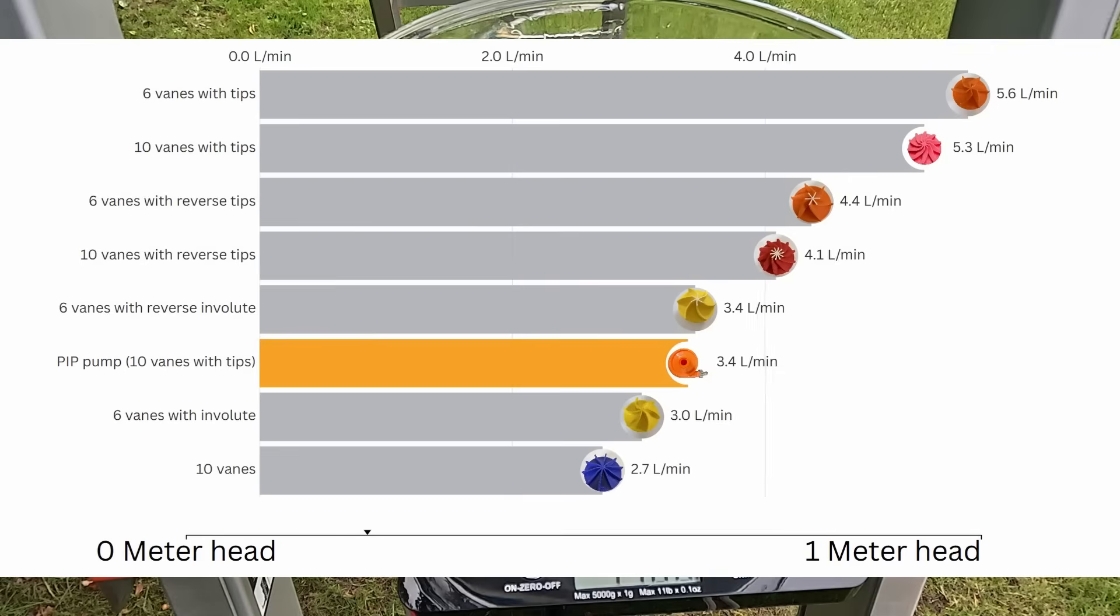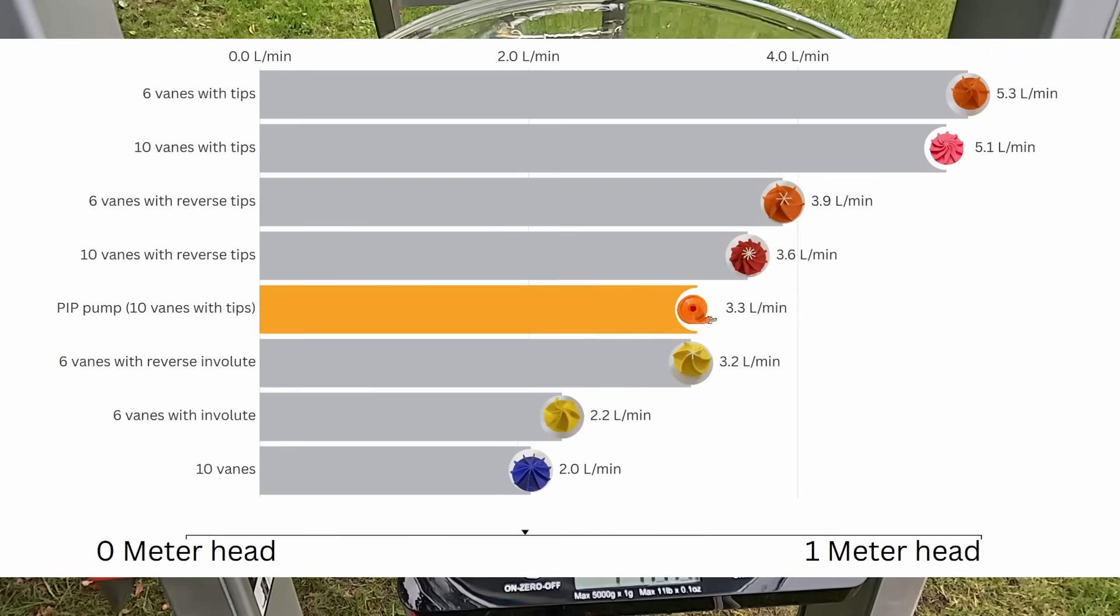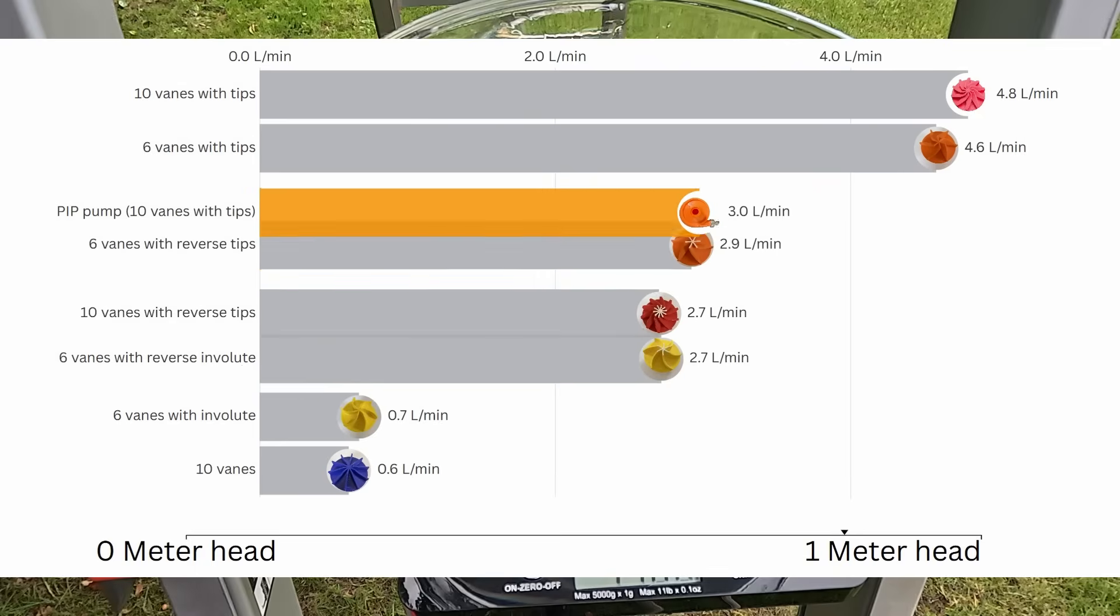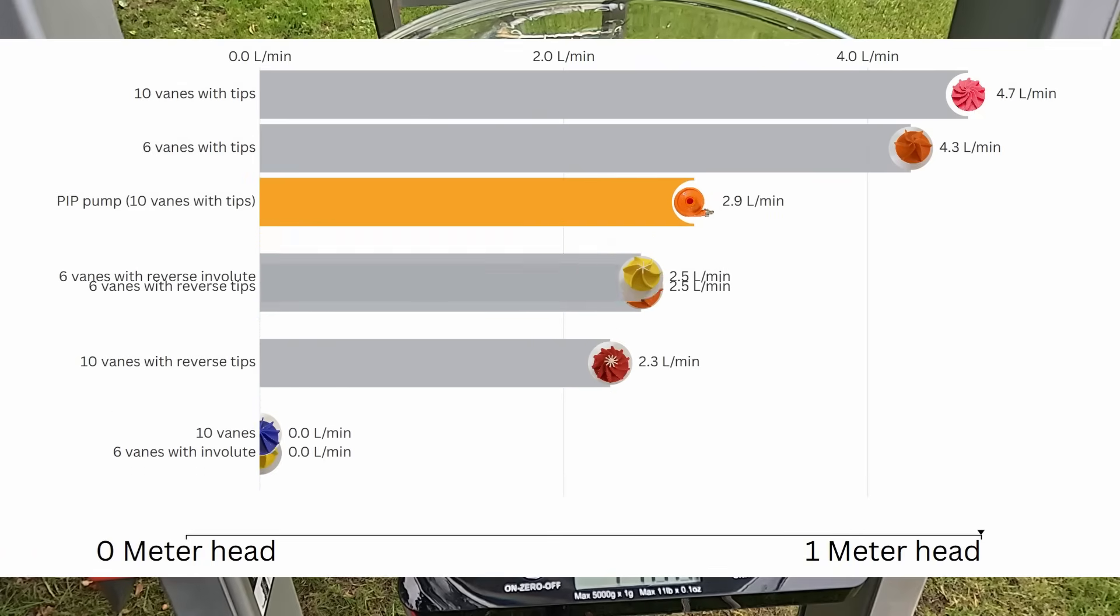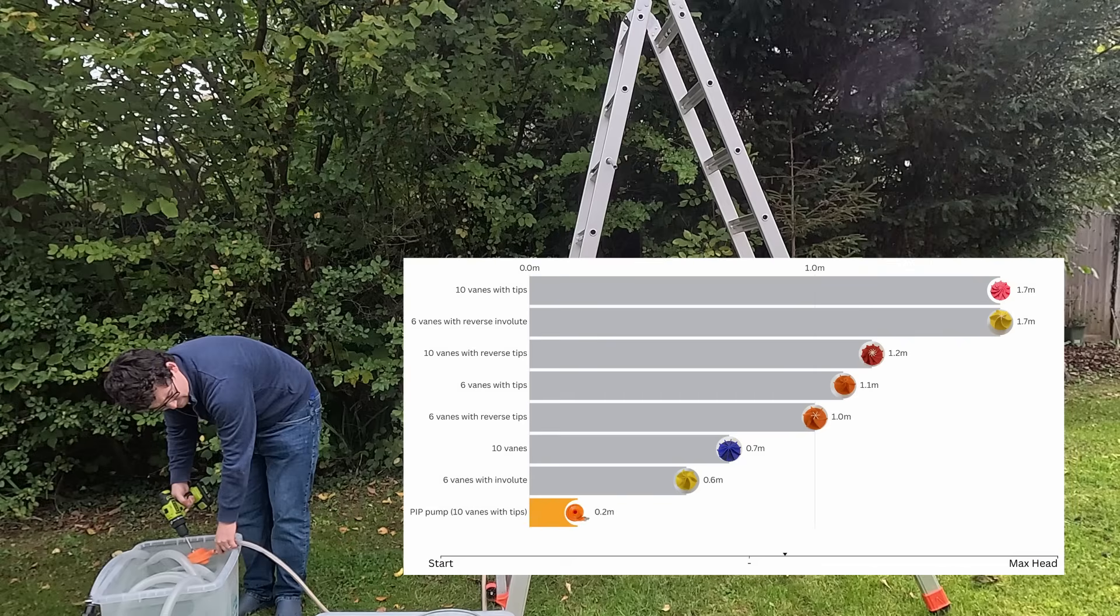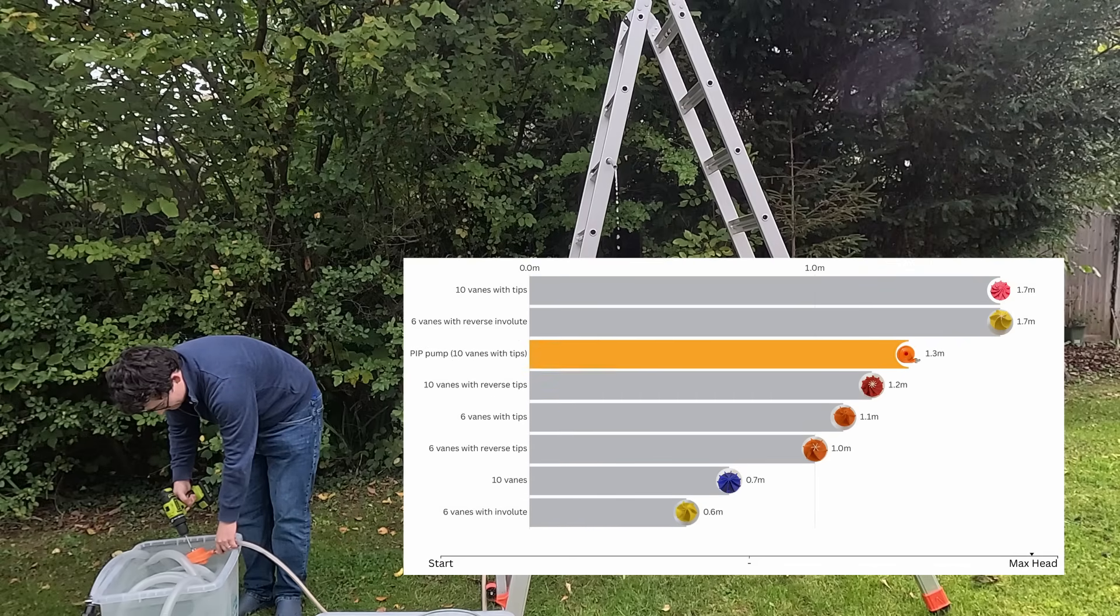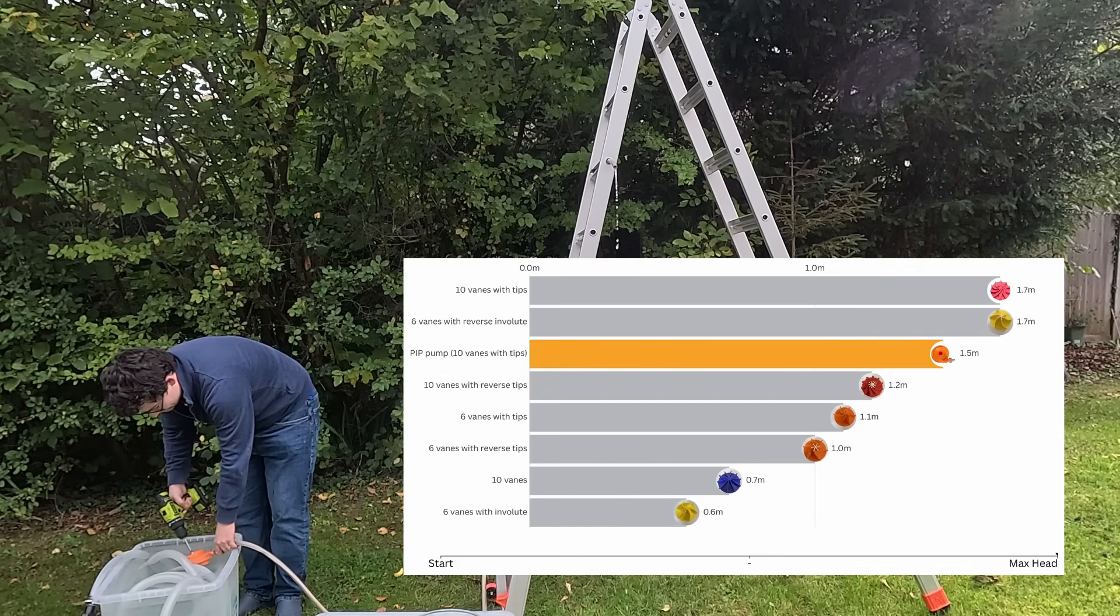Right, let's see how the position of the print-in-place pump changes from zero meter head to one meter head compared to all the other pumps that we did in the last video. You can see it's climbing up the ranks, able to put out 2.9 liters per minute at one meter. Lastly, let's look at the max pumping height. In the end, the flow stops about 1.5 meters.